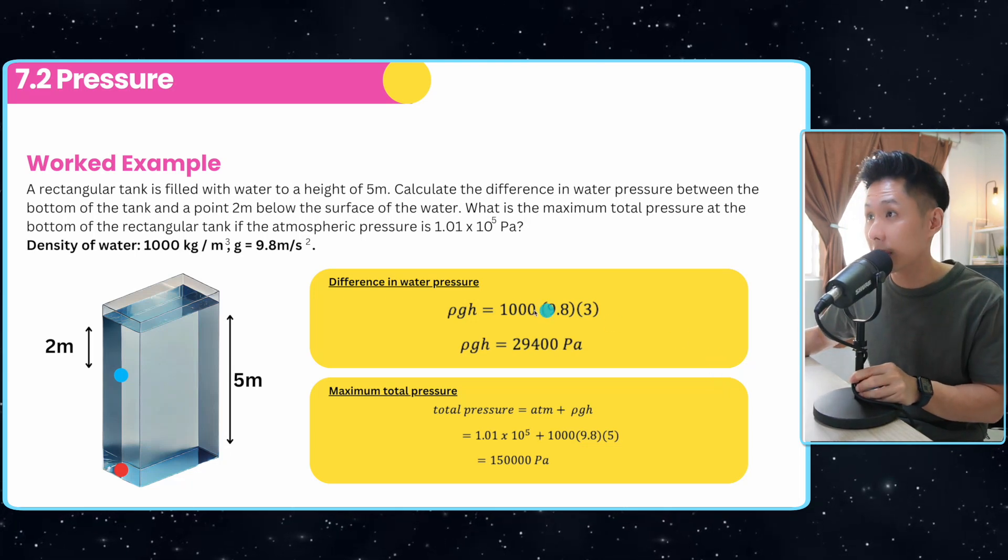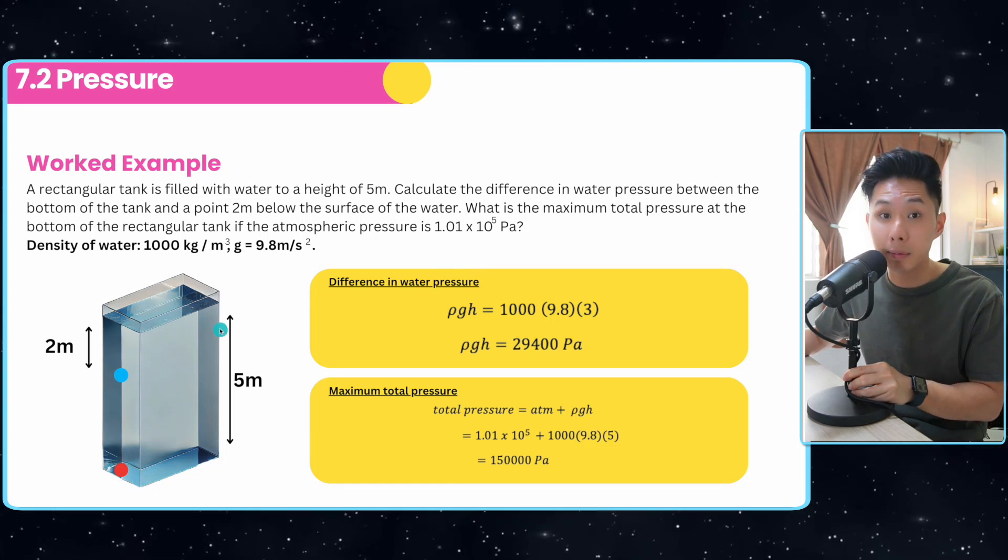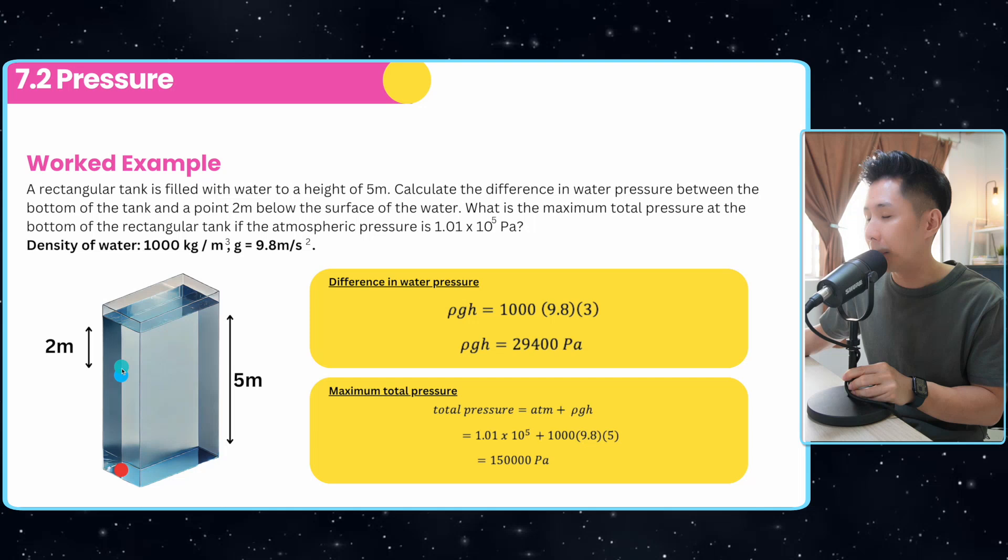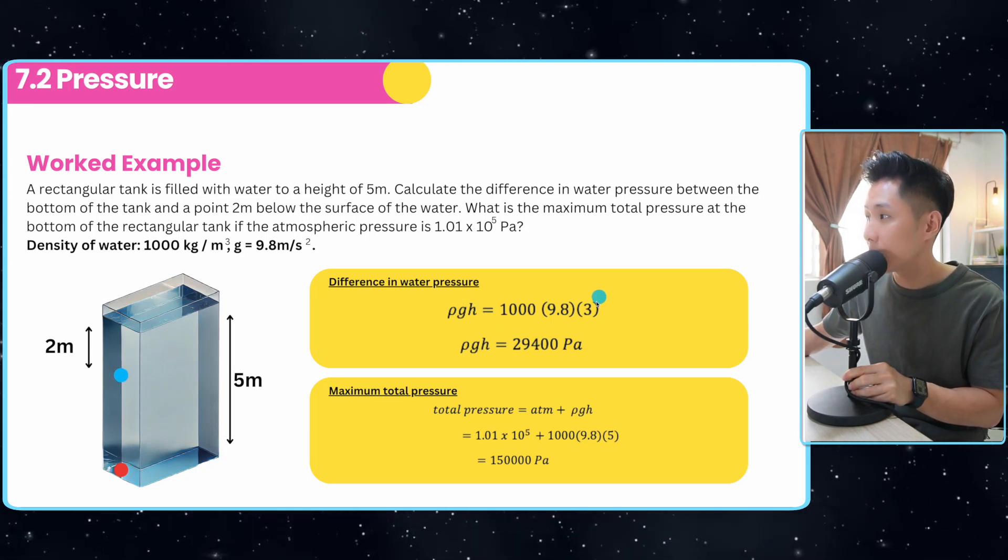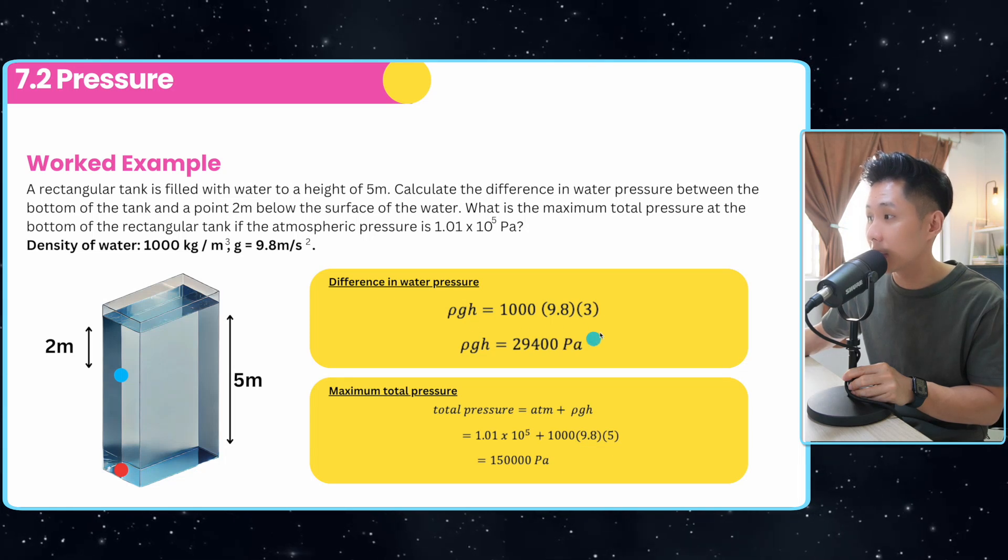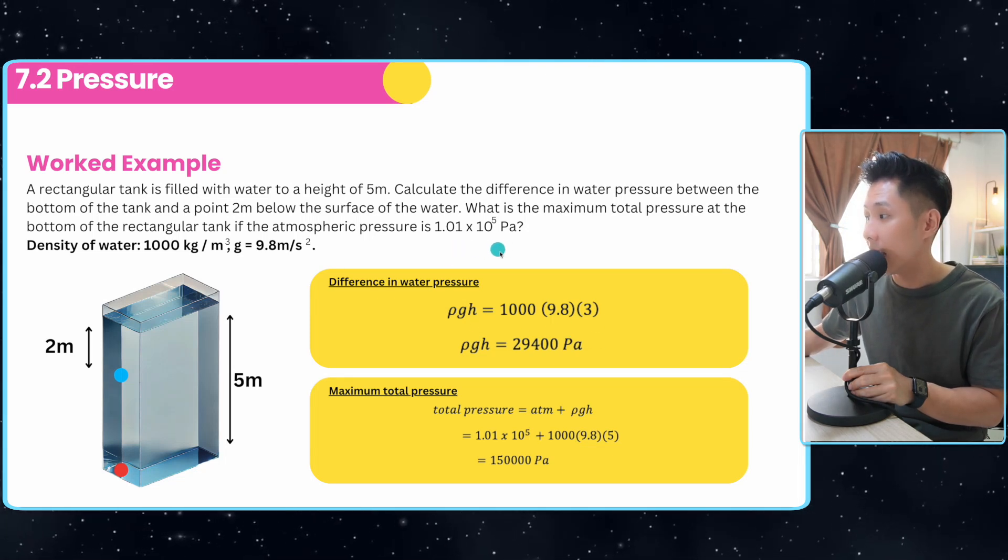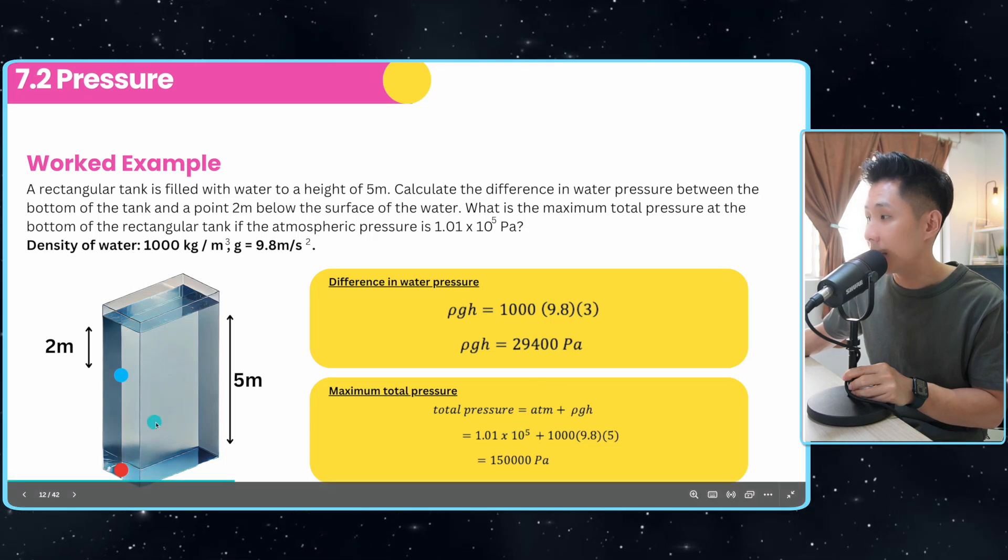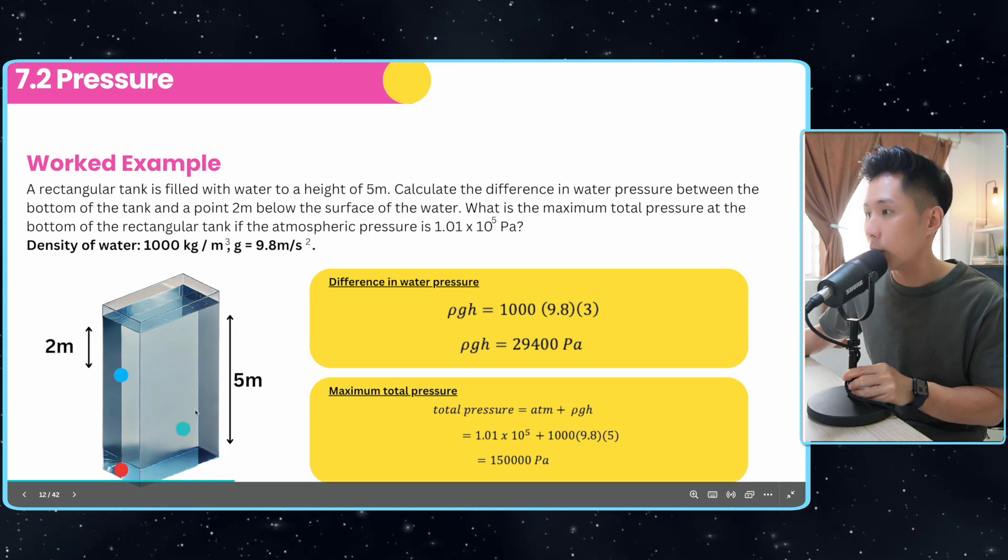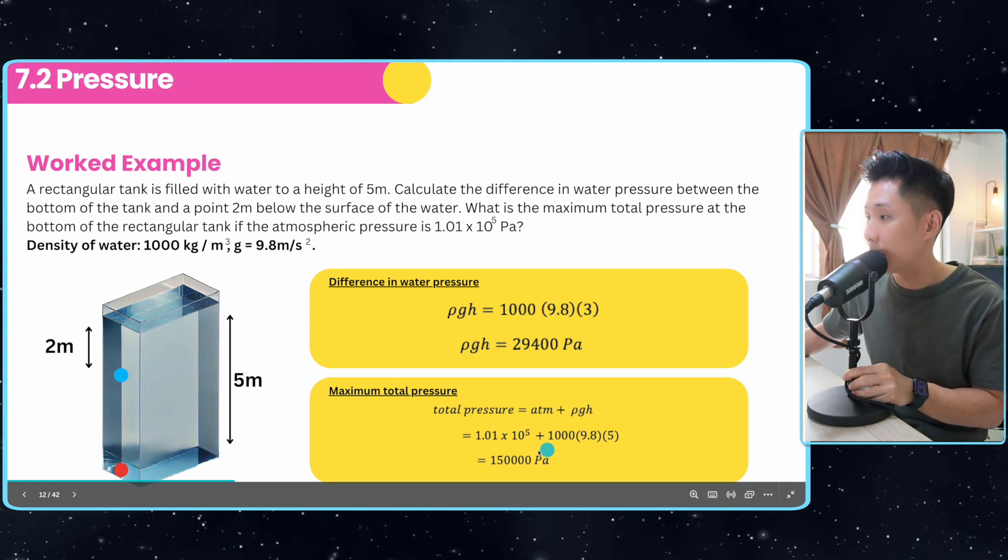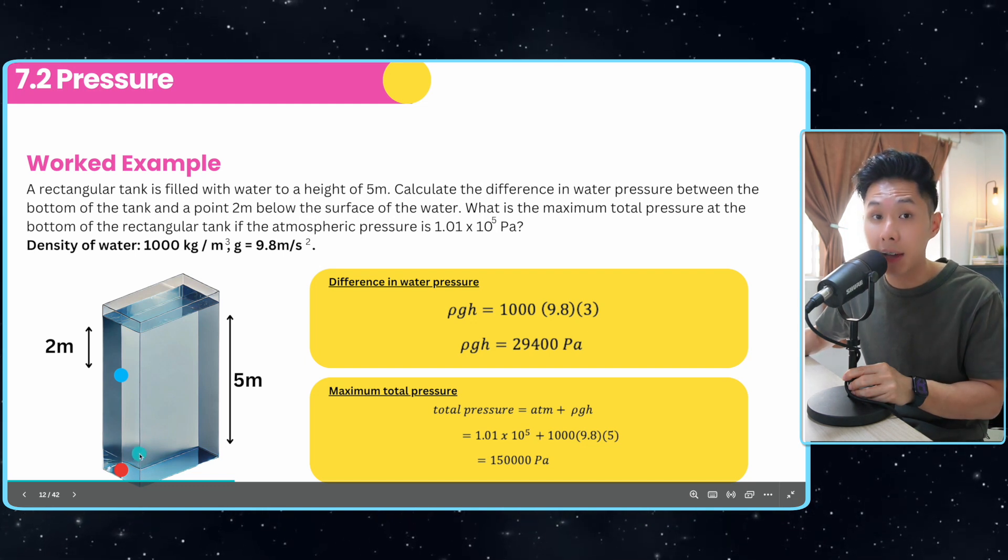Let's solve some real questions here. Assuming that I have two points in this water tank, the question asks, what's the difference in terms of their pressure at two different points? Because the difference in height is 3 meters, I can apply the ρgh formula and substitute the value 3 into ρgh and get the difference in water pressure. They also provide us with the atmospheric pressure. I just have to add the atmospheric pressure. Because they're asking for the pressure at the bottom of the tank, I will use height equal to 5. When I add them up, I'll get 150,000 Pascal. So that's the highest amount of pressure in this rectangular tank.